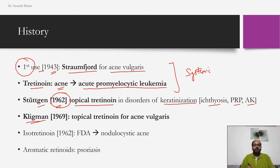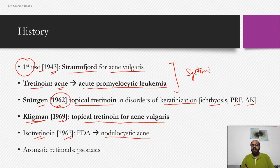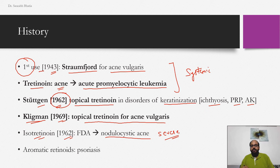Kligman, in 1969, started using topical tretinoin for acne vulgaris. Isotretinoin received FDA approval in 1982 for nodulocystic acne of the severe variety — specifically severe recalcitrant nodulocystic acne not responding to other therapies. Nowadays most of us use isotretinoin for nearly any sort of acne, but the original FDA approval was for severe recalcitrant nodulocystic acne.